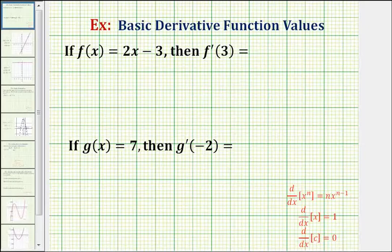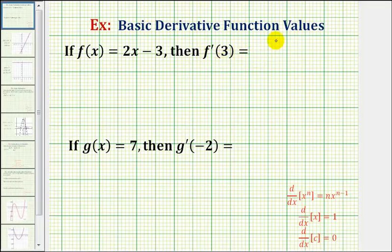Now we'll look at two examples of determining derivative function values given two basic functions. First, if f of x equals 2x minus 3, then f prime of 3 is equal to what value?